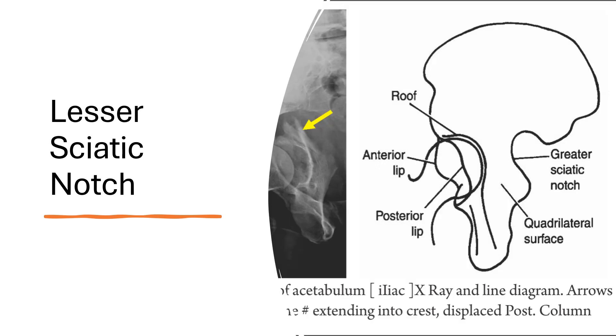The lesser sciatic notch lies below the greater sciatic notch and forms the superior border of the lesser sciatic foramen.